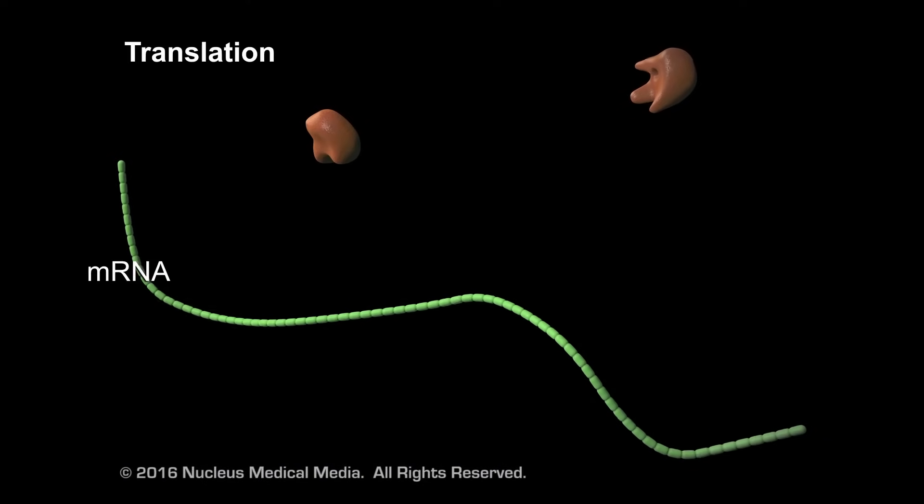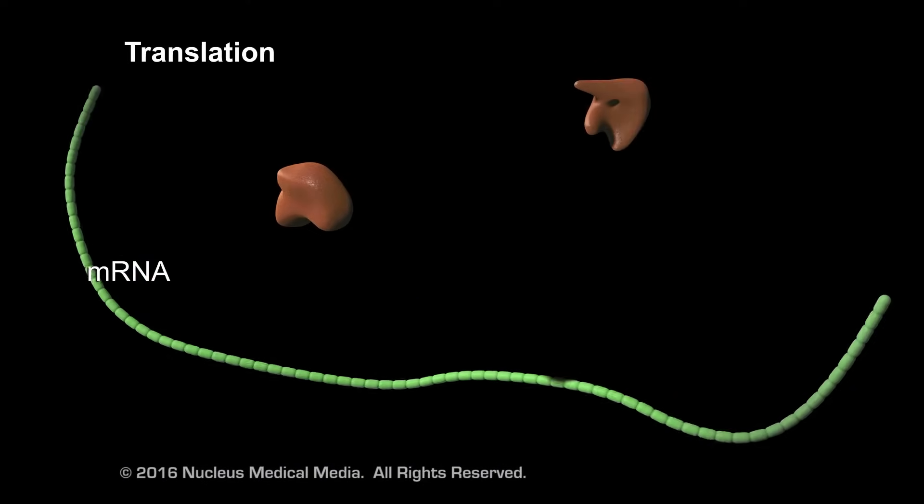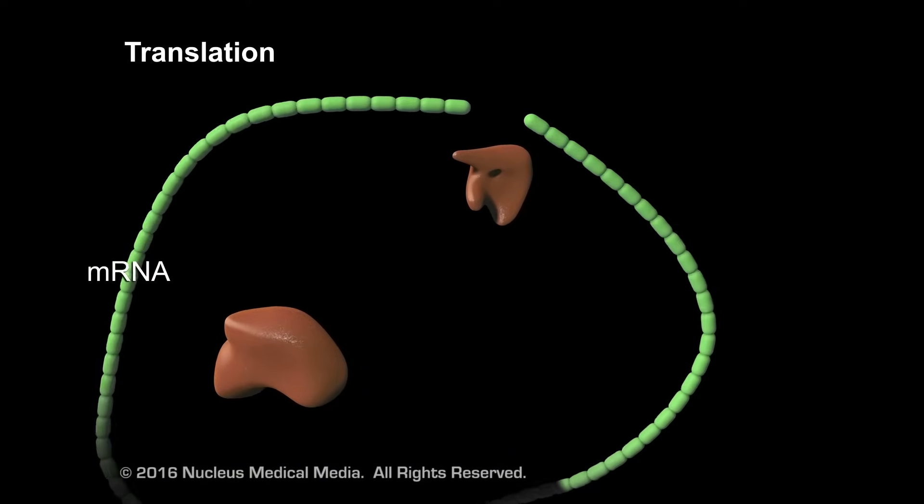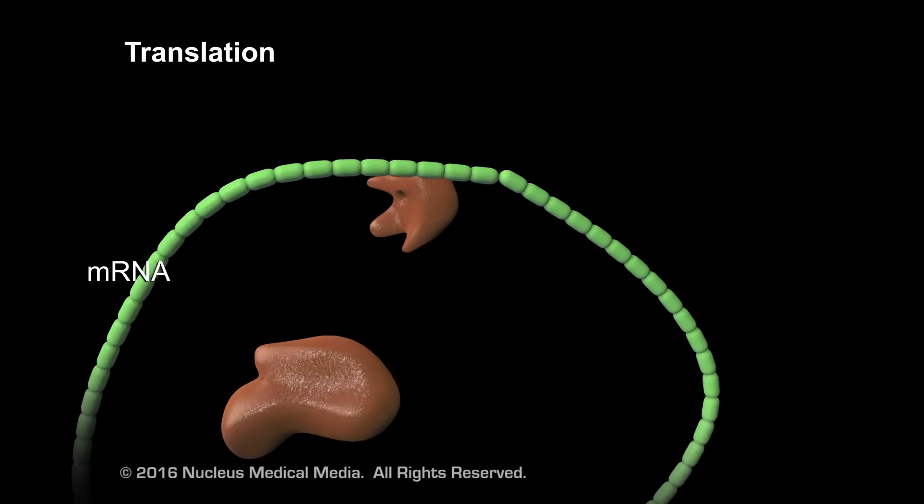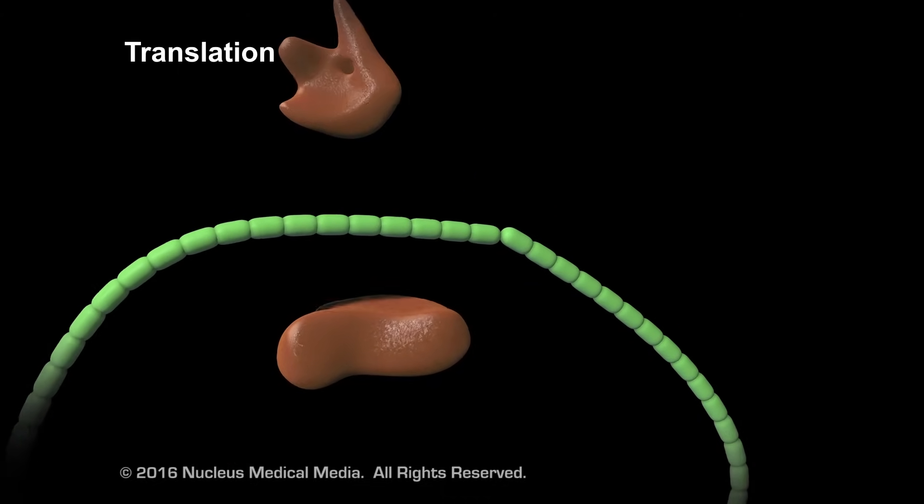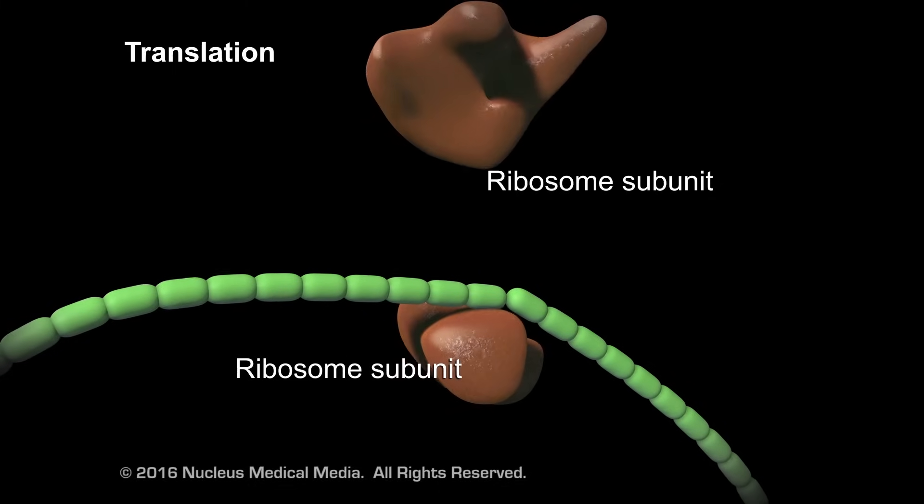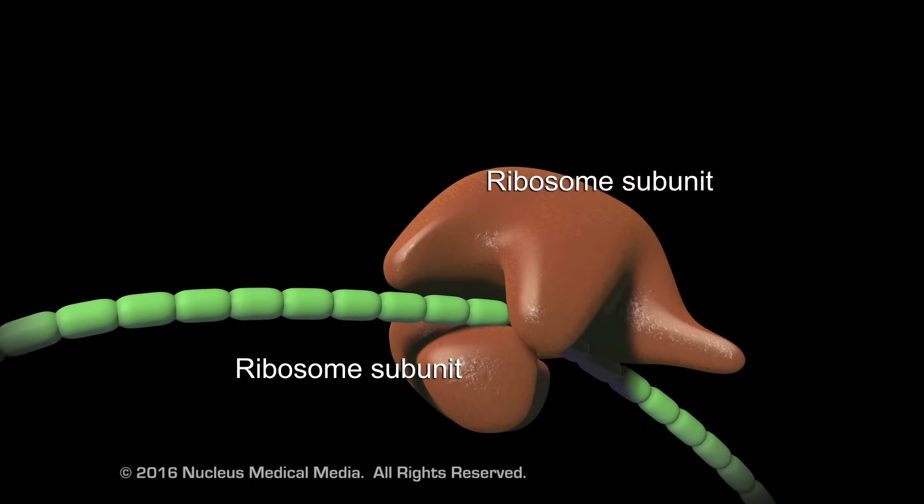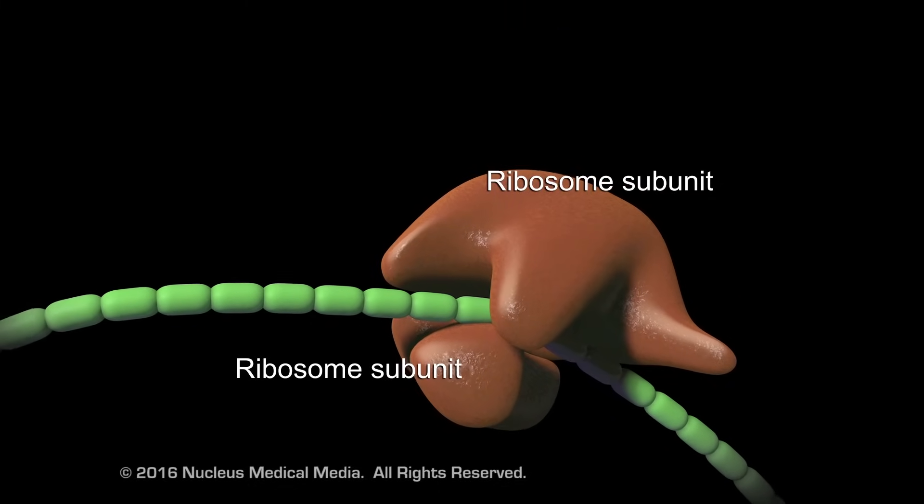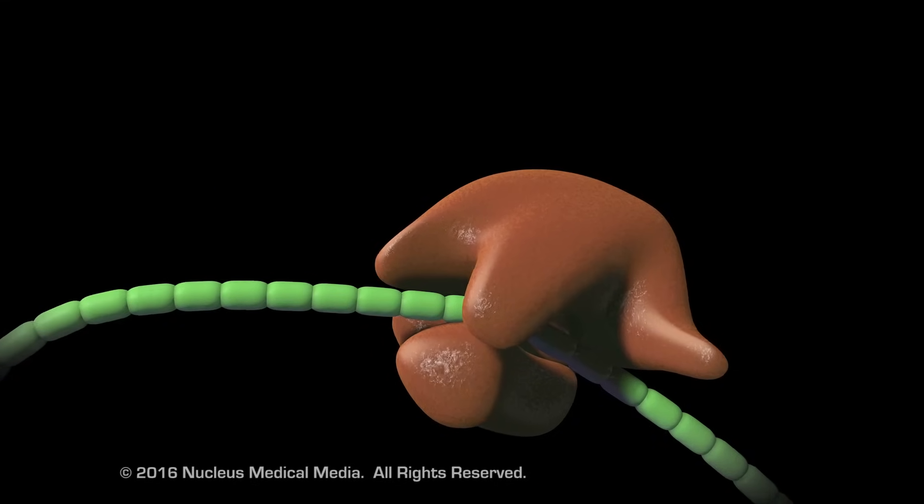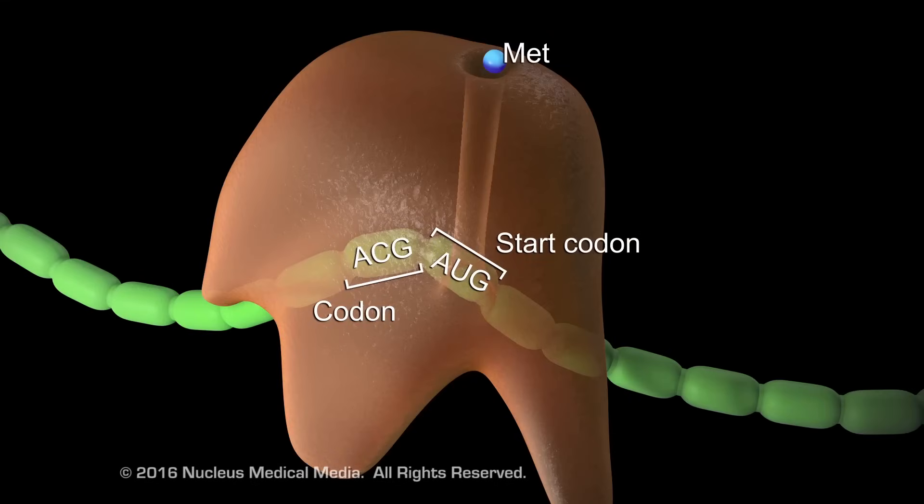Translation is the process of using messenger RNA to assemble amino acids into a protein. The structure that will read the mRNA, called a ribosome, attaches to the mRNA strand. Initiated by a start codon, the ribosome reads each subsequent codon.